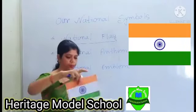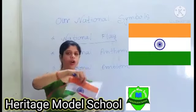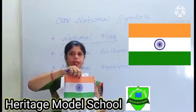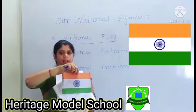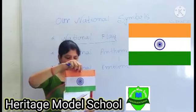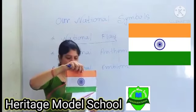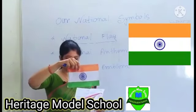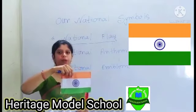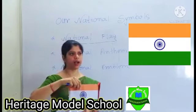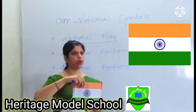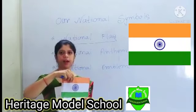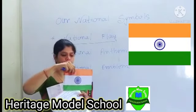All the colors in the flag indicate some meaning. The first color is saffron — saffron stands for courage and sacrifice. Next, in the middle, the color is white. White color stands for truth and peace. Whenever we go to a function based on peace, we wear white cloth, because we show peacefulness. So white is the color of peace and truth.